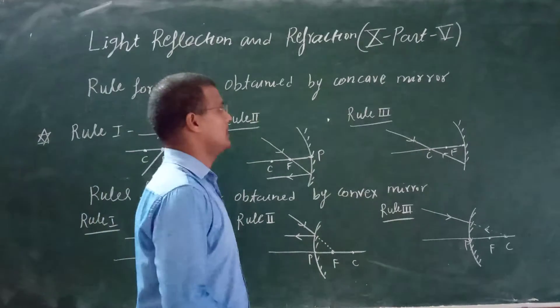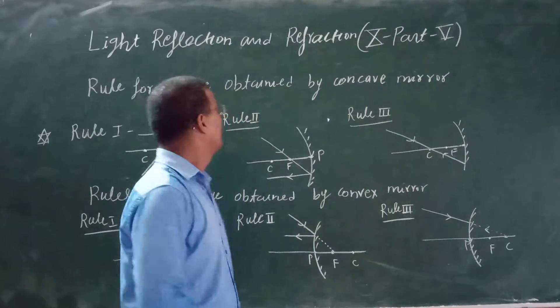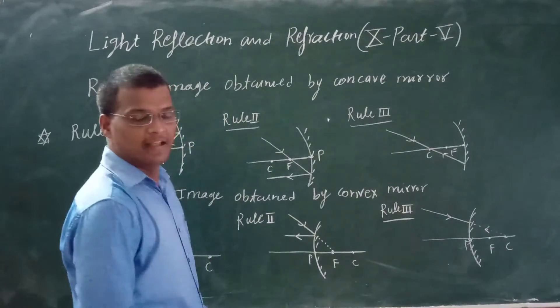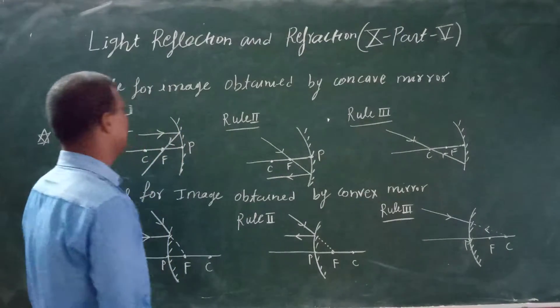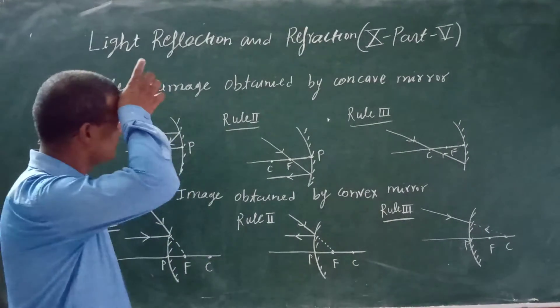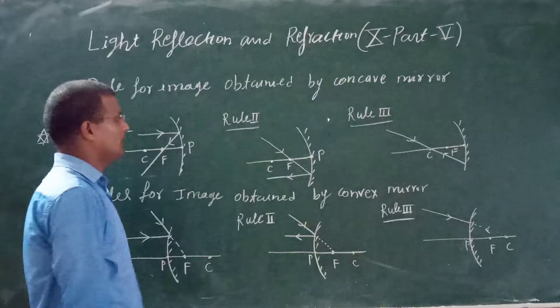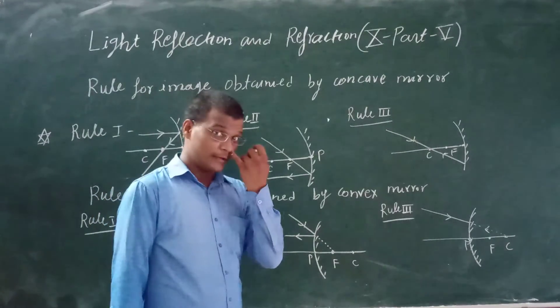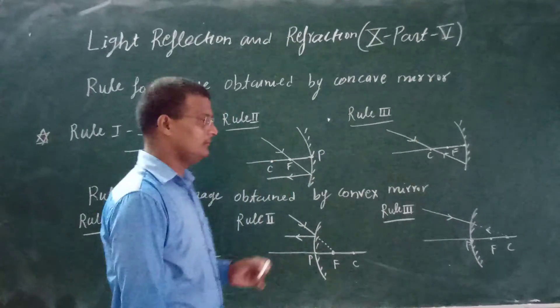Hello friends, today we start with Part 5 of this chapter: Light, Reflection and Refraction. Today we discuss the rules for images obtained by concave mirror and convex mirror. This is the most important example of this chapter. Take a look.